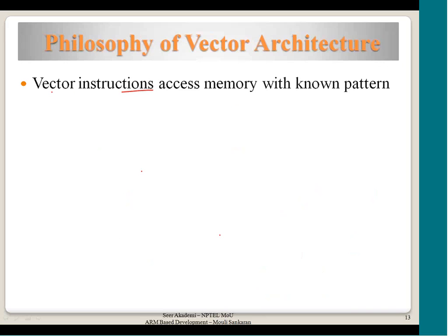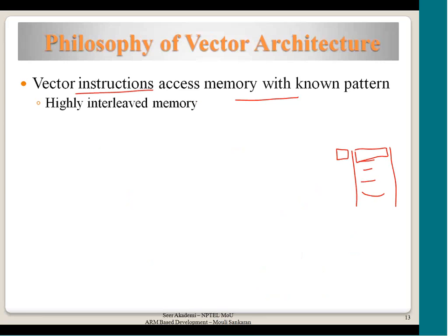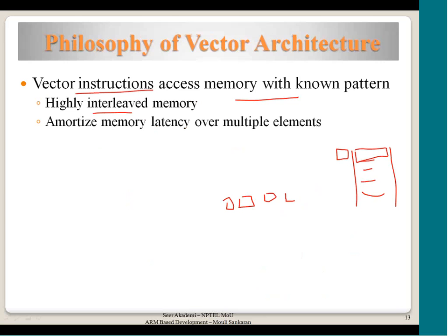Vector instructions access memory with known patterns. The vector of data needs to be in contiguous space, so the memory configuration for a vector processor must be set up properly. Interleaved memory — where multiple banks work in parallel — is important for feeding the processor with data. In a DIMM package of DRAM, multiple chips are there and data is accessed from all chips simultaneously. This interleaving improves performance significantly.